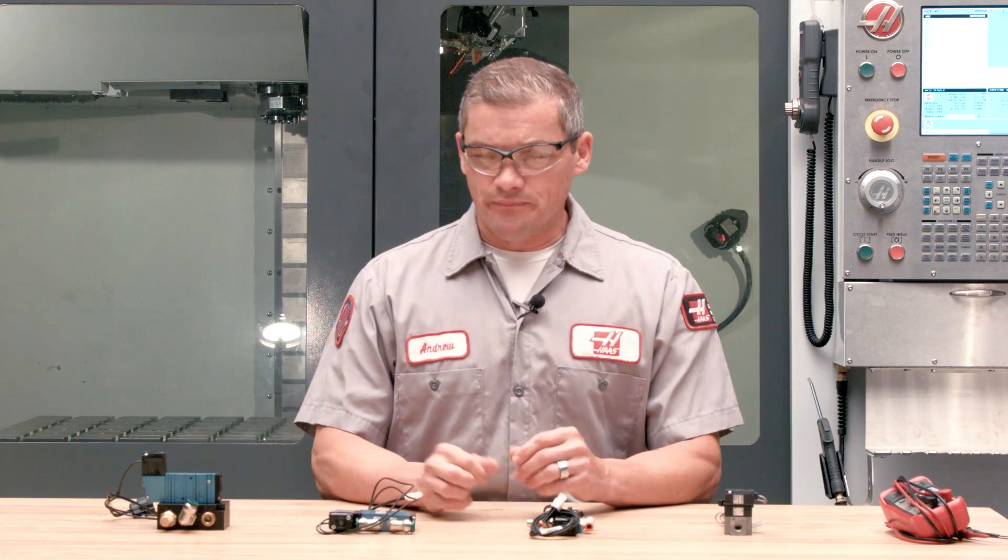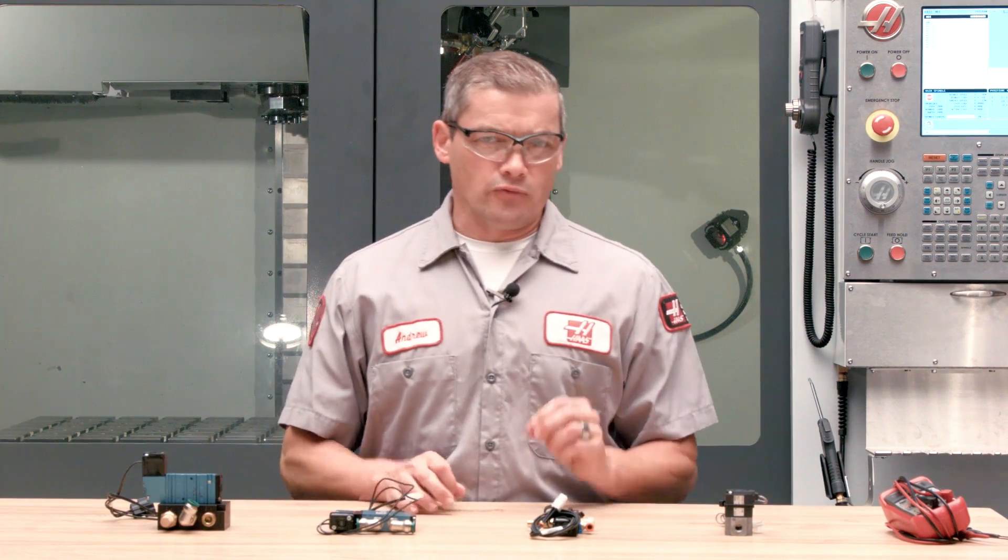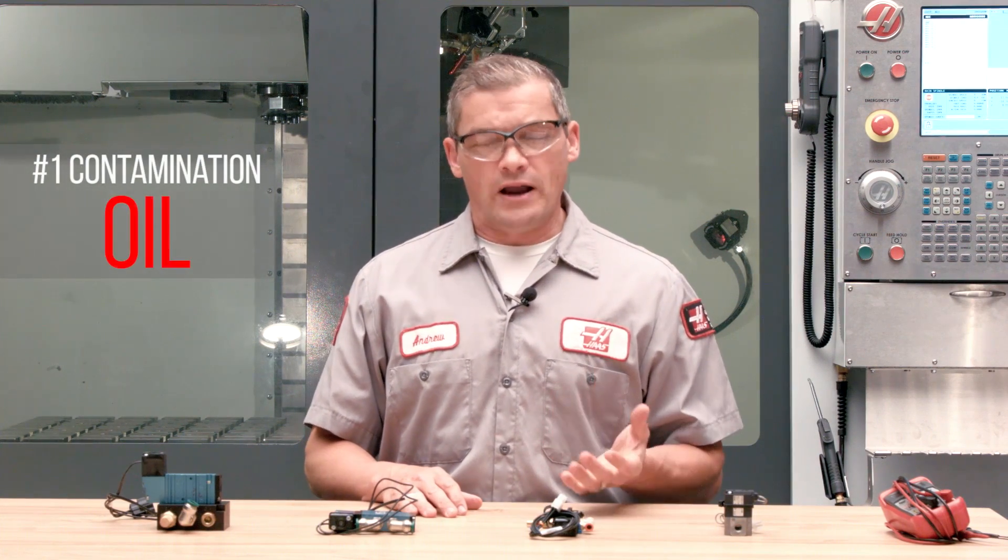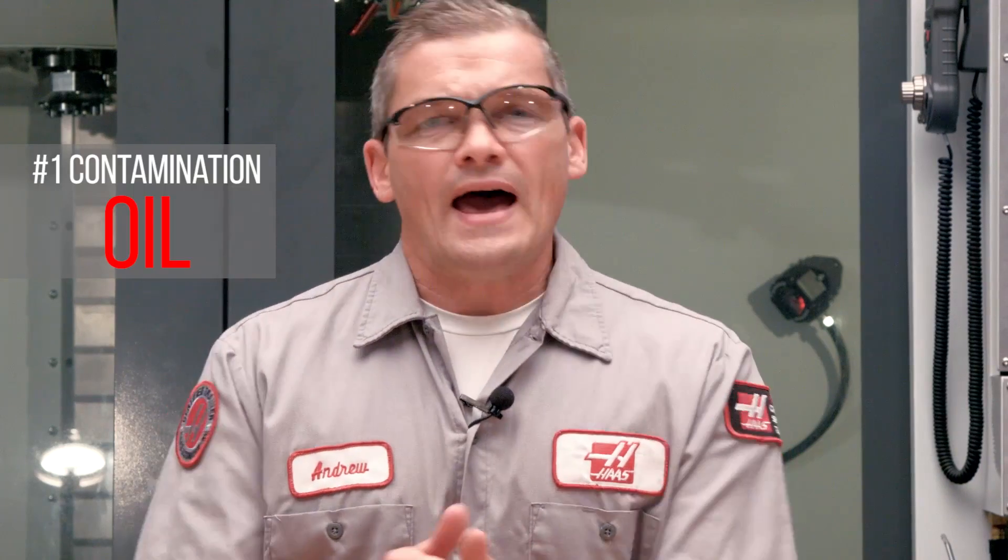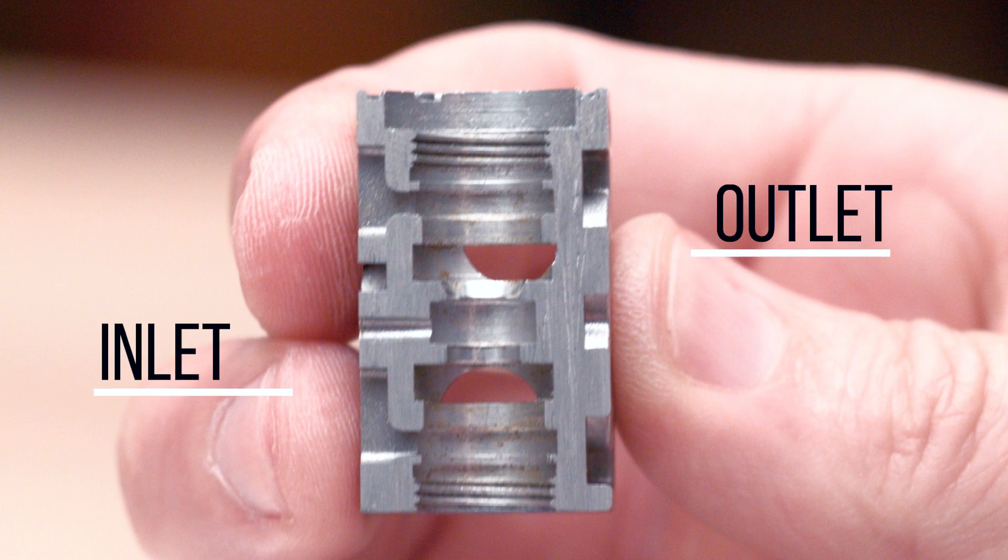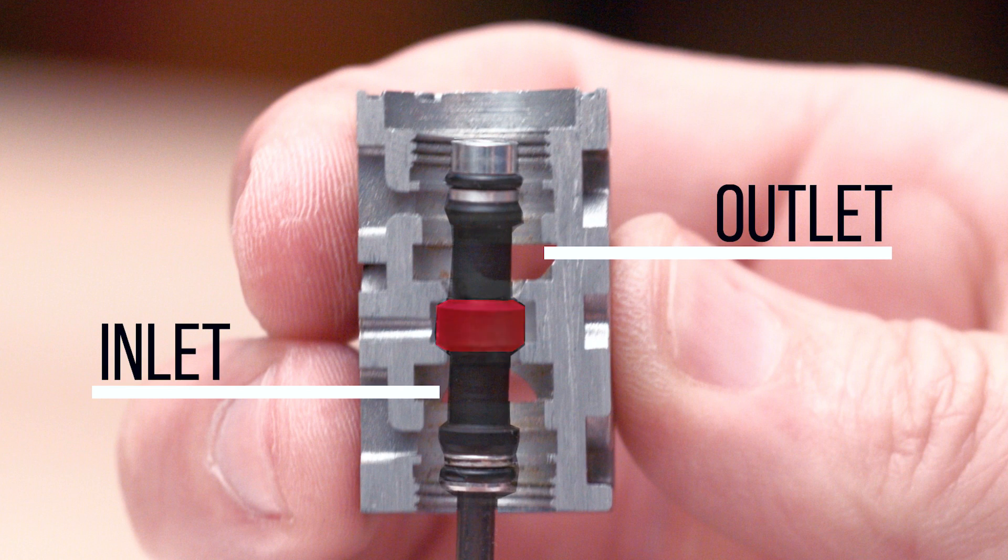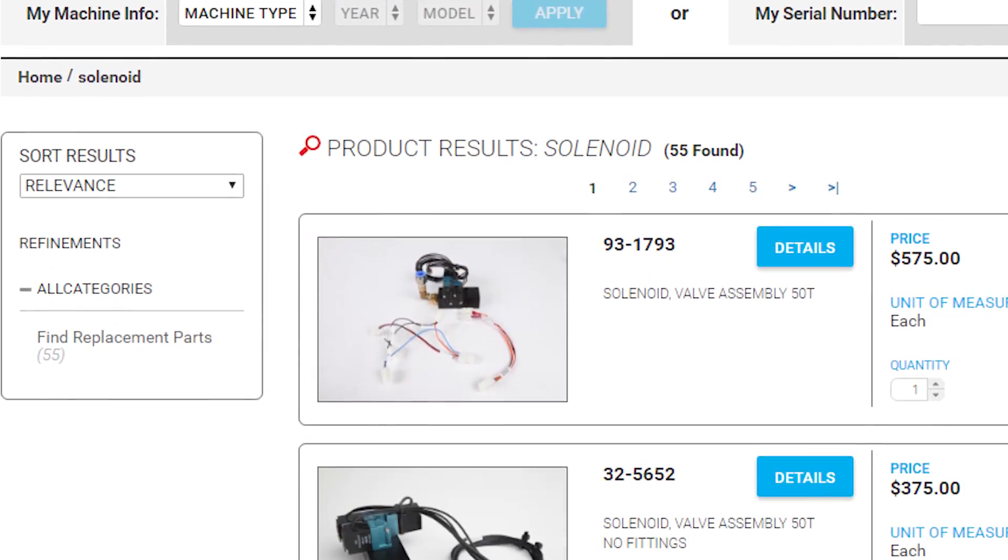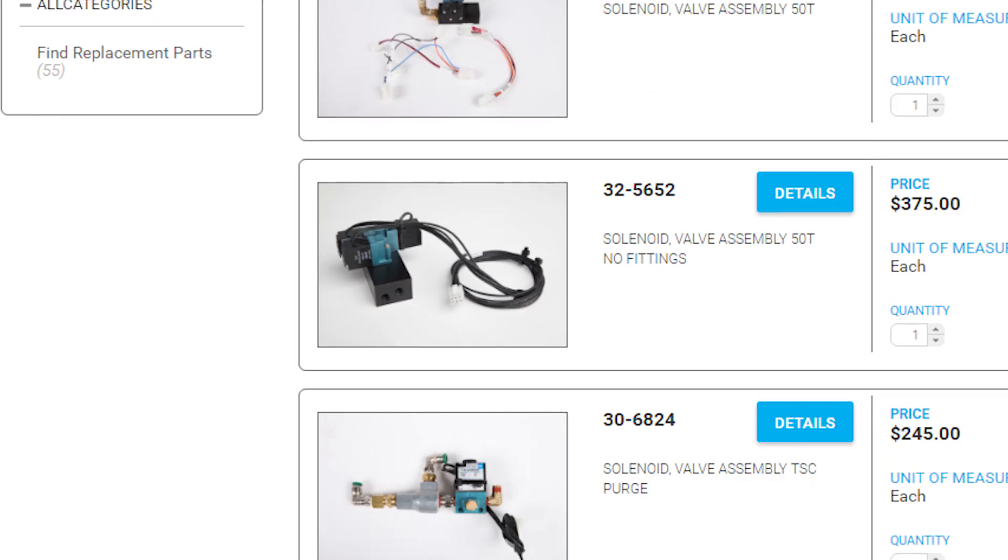So what's the number one cause for failure by contamination? Our testing shows that the number one reason solenoids malfunction and fail is due to contamination by oil. Oil acts as a solvent and it causes the internal seals inside the solenoid to swell and change shape. And once the seals inside the solenoid have reached this point, there's no going back. You can take that solenoid off and try to clean it out. But most likely, your next stop is going to be HaasParts.com to get a replacement. And you might ask, where are those contaminating oils come from?